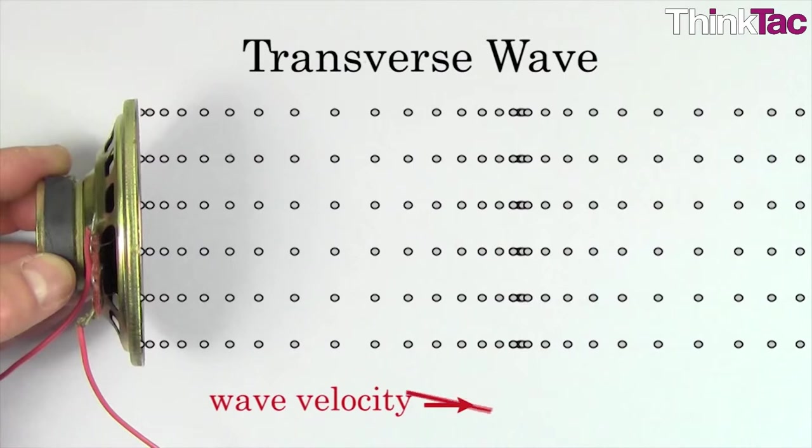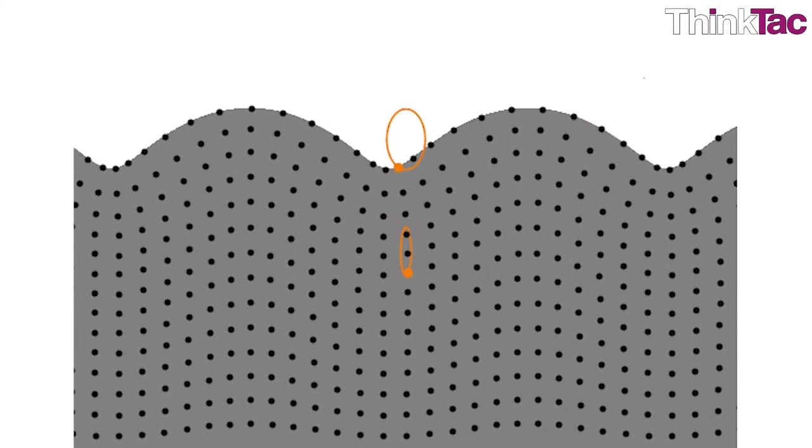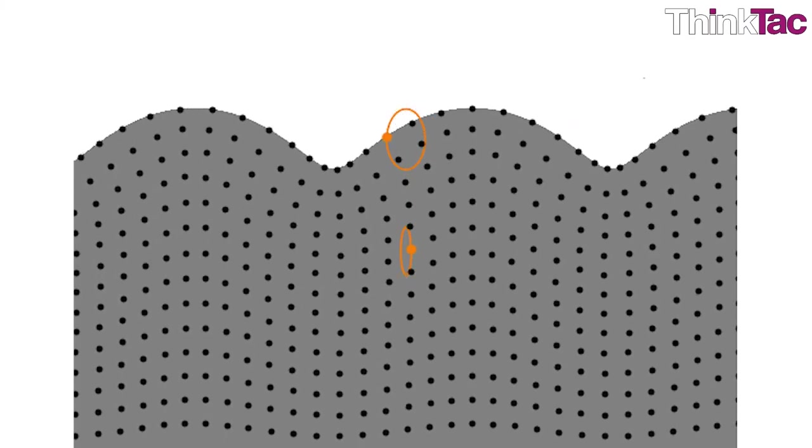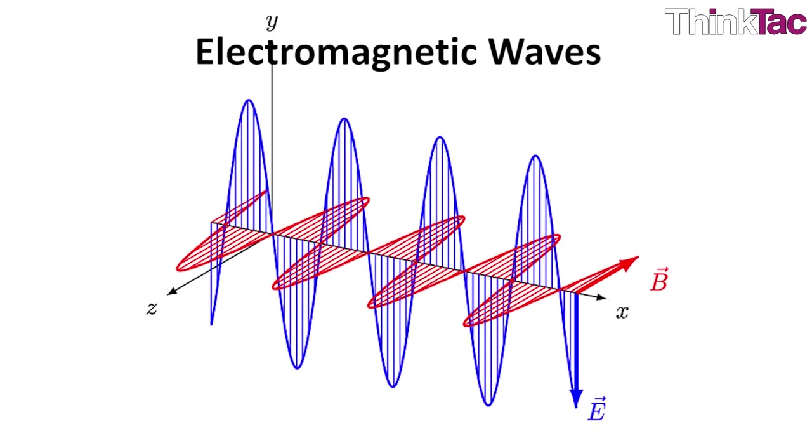In case of a transverse wave, however, the movement of the particles of the medium, solid medium in case of sound waves, is perpendicular to the direction of propagation of the wave. Mechanical waves require a medium to propagate and cannot travel through a vacuum, in contrast to electromagnetic waves.